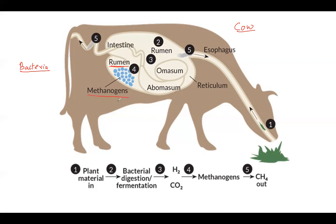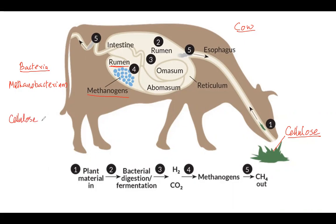This bacteria is known as methanogen, or by another name, methanobacterium. Collectively, the different species are called methanogens or methanobacterium. The food eaten by the cow contains mostly cellulose, and cellulose needs an enzyme called cellulase to be digested. These animals don't have cellulase, so the bacteria helps the animal to digest cellulose - this is the basic function of methanogen.